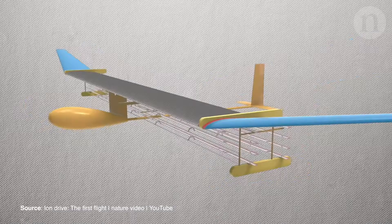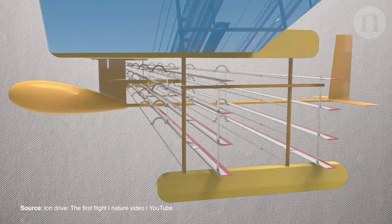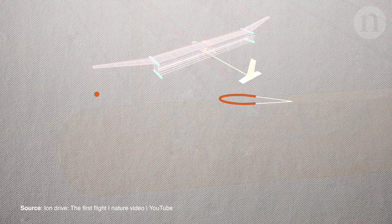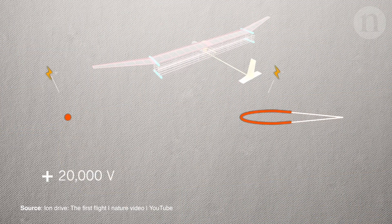The plane is designed to exploit this effect. An array of thin wires, which act as positively charged electrodes, are strung beneath the front end of the plane's wing, while the thicker wires along the back end of the plane's wing serve as negative electrodes.